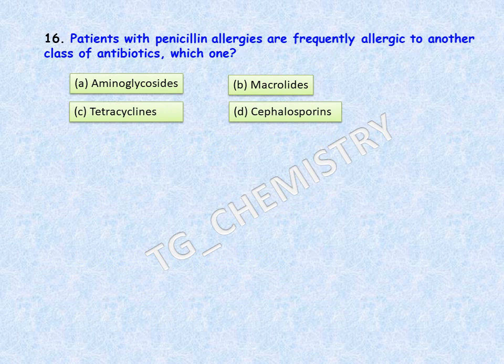Sixteenth question: patients with penicillin allergies are frequently allergic to another class of antibiotics. Which one is this? Options are: A, aminoglycosides; B, macrolides; C, tetracyclines; D, cephalosporins. The correct answer is option D, cephalosporins.